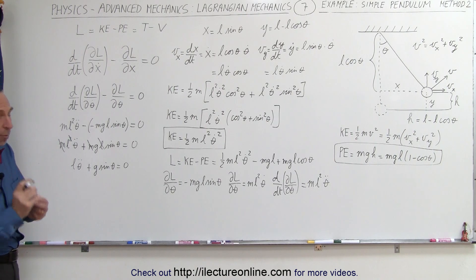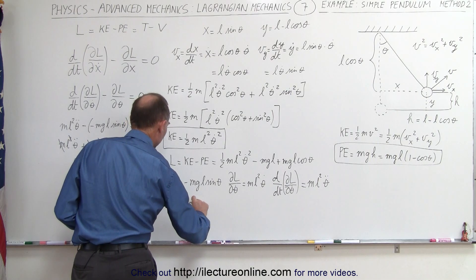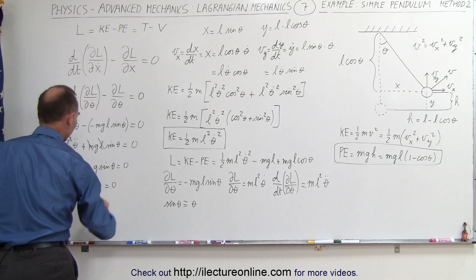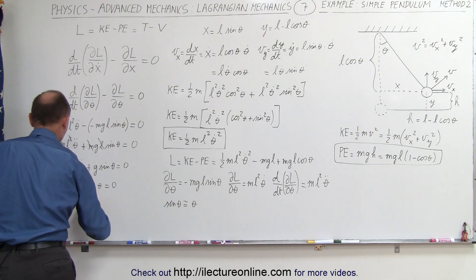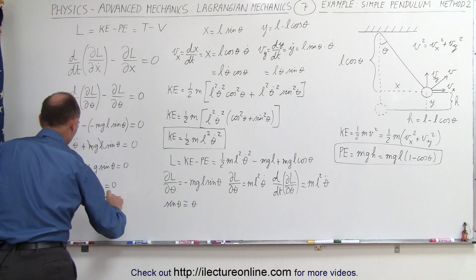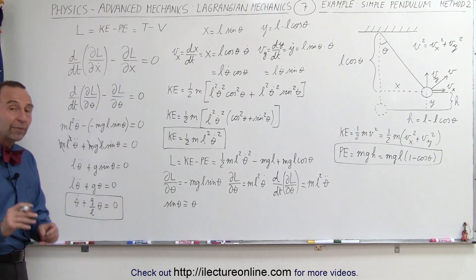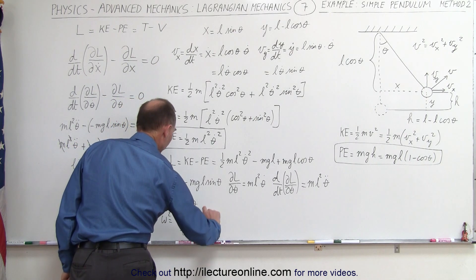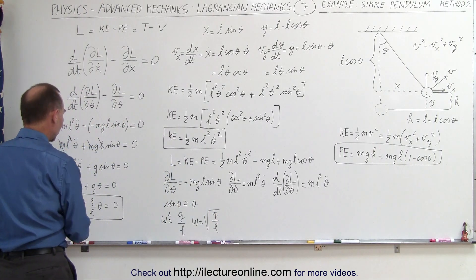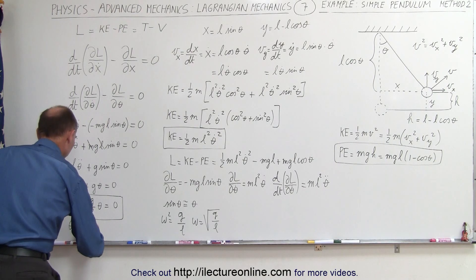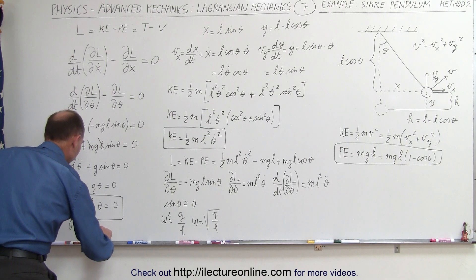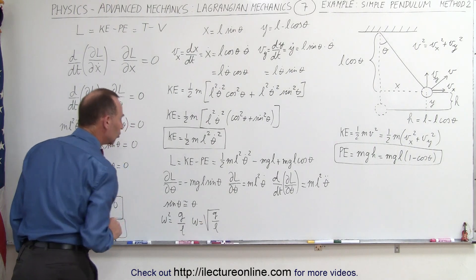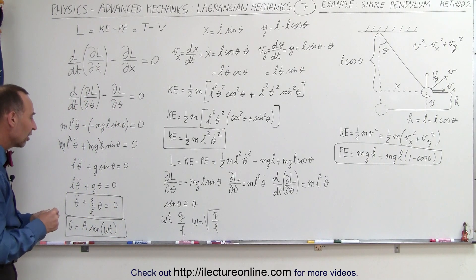We still need to make one more substitution. Since the angle theta is assumed to be small, the sine of theta is approximately equal to theta, so we replace sine of theta with theta: l theta double dot plus g times theta equals zero. Dividing both sides by l gives theta double dot plus g over l times theta equals zero, which is a general second-order differential equation describing the motion of a pendulum. Recognizing that omega squared equals g over l, so omega equals the square root of g over l, we can solve this: theta equals some amplitude times sine or cosine of omega t, where omega is the angular frequency of oscillation.